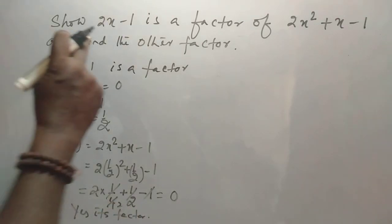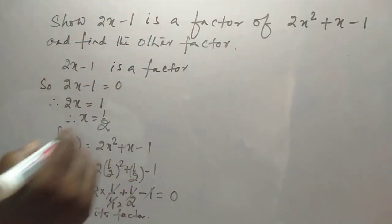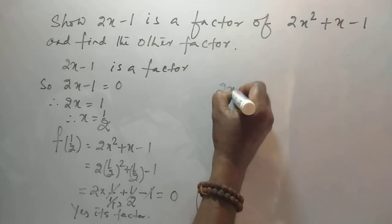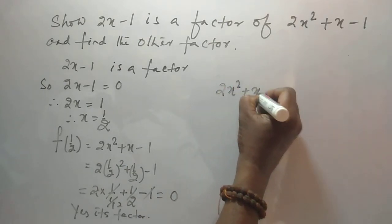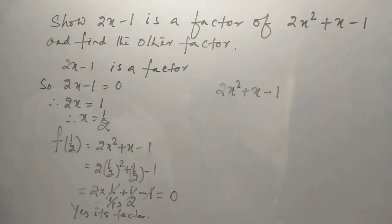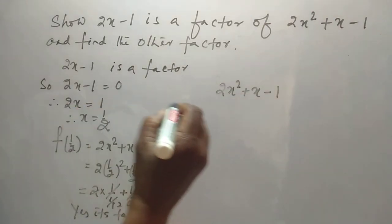Then, in another part, the other factor. Now, we have 2x square plus x minus 1. By middle term splitting,